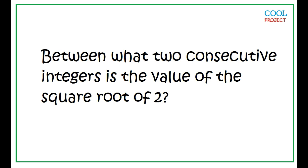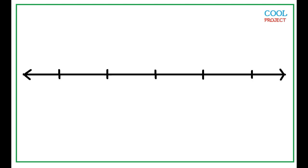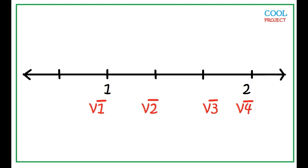Between what two consecutive integers is the value of the square root of 2? On the number line, square root of 2 is between square root of 1 and square root of 4. Square root of 1 is equal to 1, and square root of 4 is equal to 2.